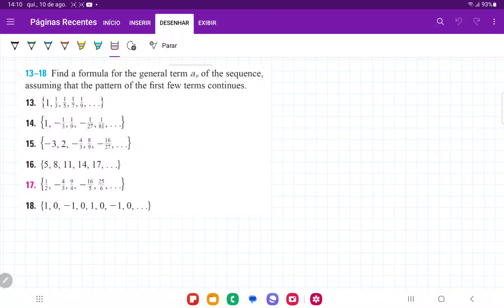So for number 13, they want us to find a formula for the general term an, assuming that the pattern of the first few terms continues.